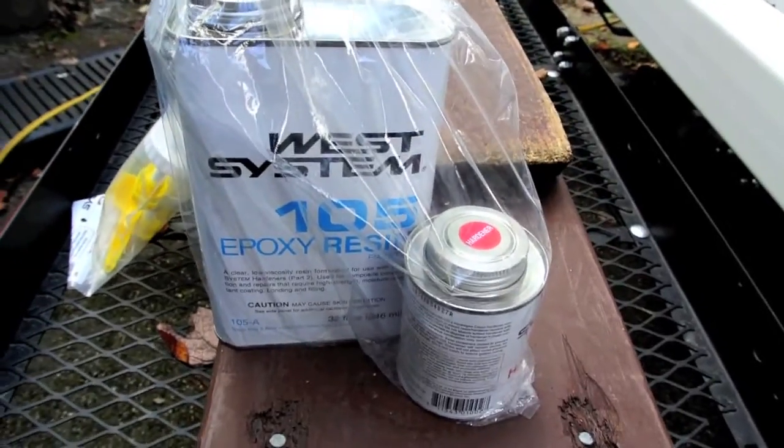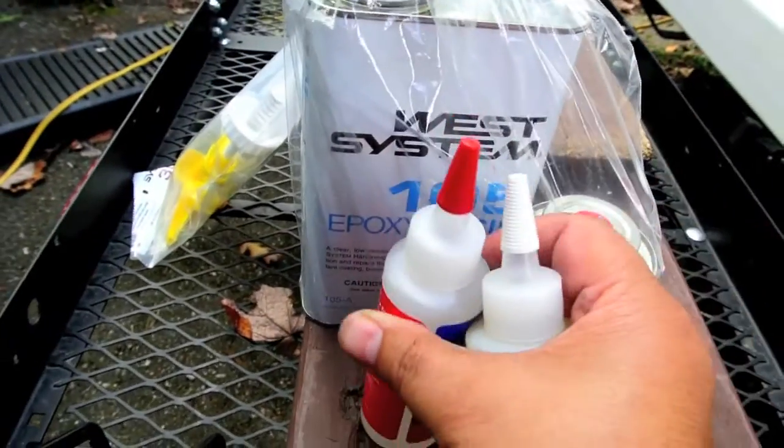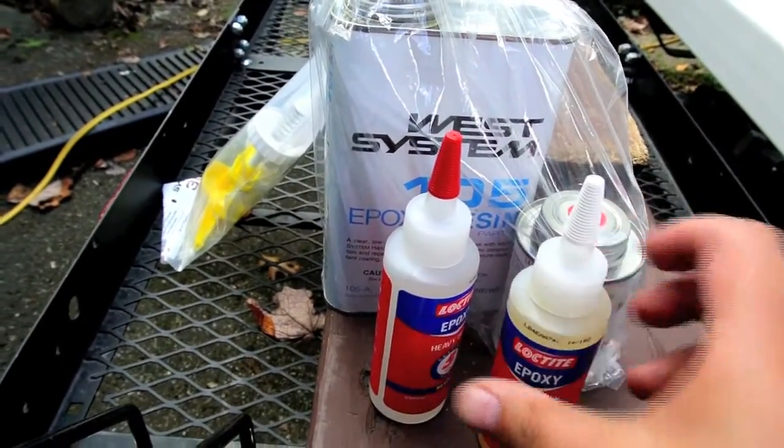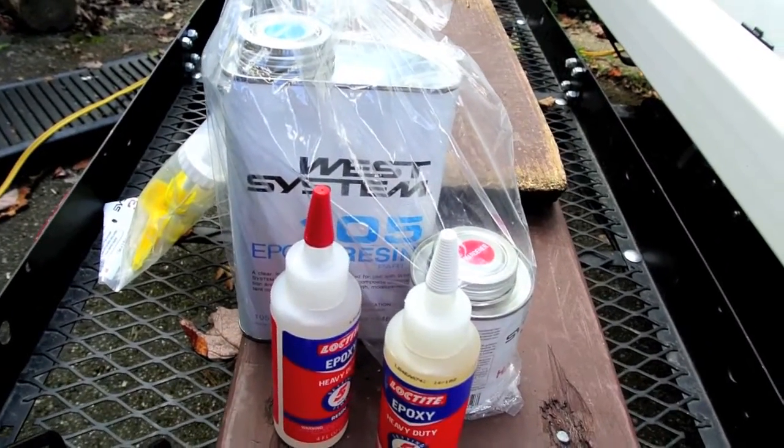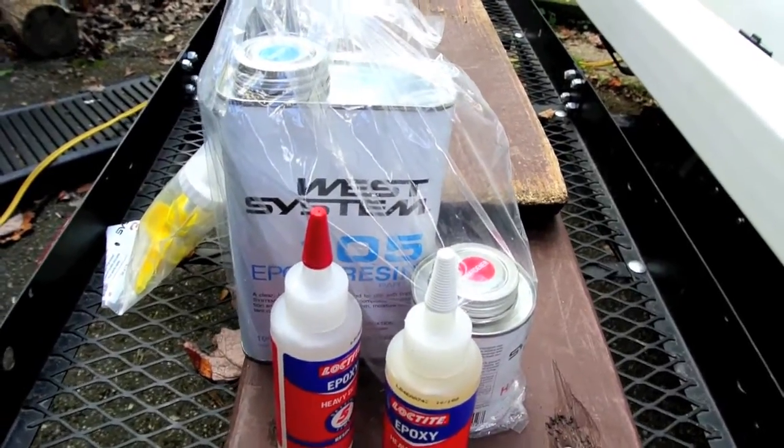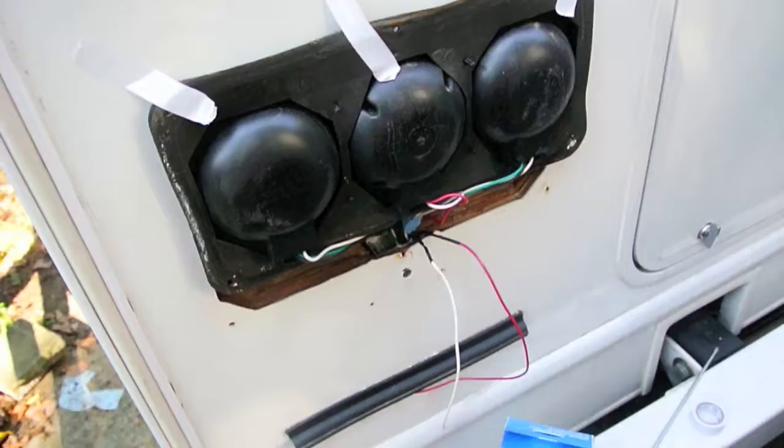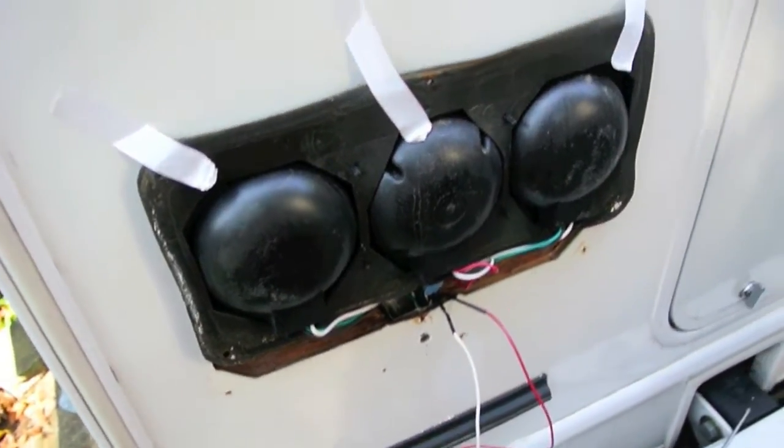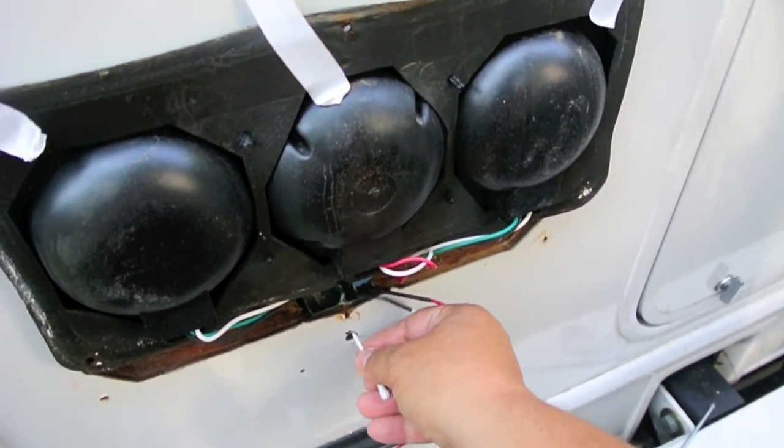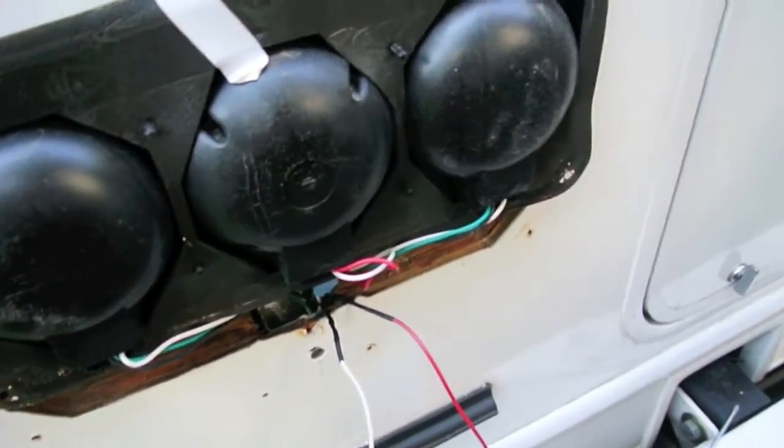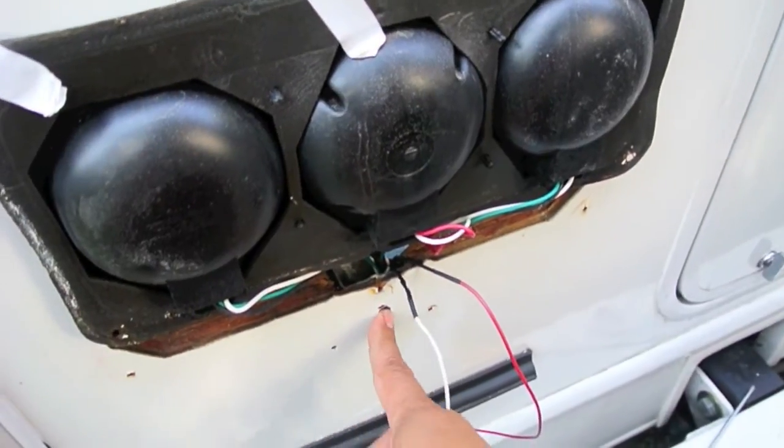Now normally on a project like this I would be using this West System 105 epoxy, but for this one I'm going to use just this Loctite stuff because it's five minutes. This stuff takes about 24 hours really in this type of weather and it's more for structural things. Since this really isn't structural I think this faster epoxy will work okay. So what I'm going to do here is I'm going to mix up a small amount of epoxy and take a Q-tip and line the hole like that with epoxy. That way this will always be impervious to any further water damage.